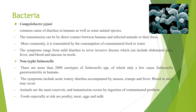Next, non-typhic Salmonella. There are more than 2,000 serotypes of Salmonella species, of which only a few cause Salmonella gastroenteritis in humans. Symptoms include acute watery diarrhea accompanied by nausea, cramps, and fever; blood in stool may also occur. Animals are the main reservoir and transmission occurs by ingestion of contaminated food products. Foods especially at risk are poultry, meat, eggs, and milk.